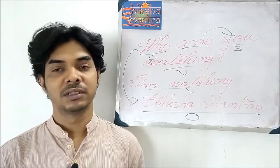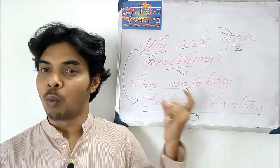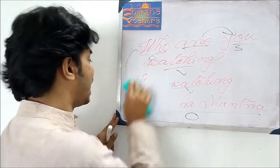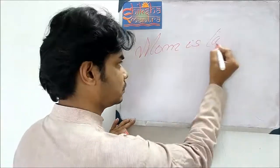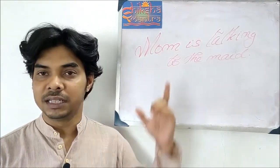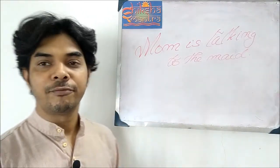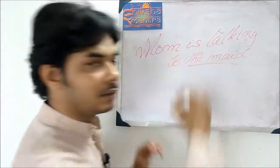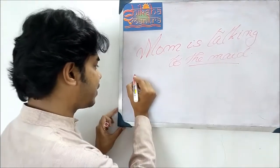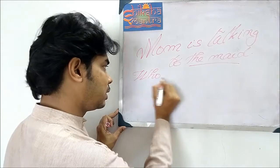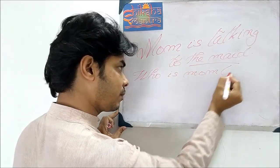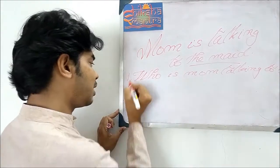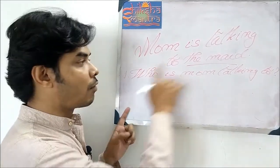When 'who' is used as an interrogative pronoun, we can use it as an object as well. So besides being subjective, it is also objective — this is what we need to remember. Now here is another example: 'Mom is talking to the maid.' How can we form questions using interrogative pronouns? Our target is 'the maid.' So we may write: 'Who is mom talking to?' — this is question number one, where 'who' is used as object.